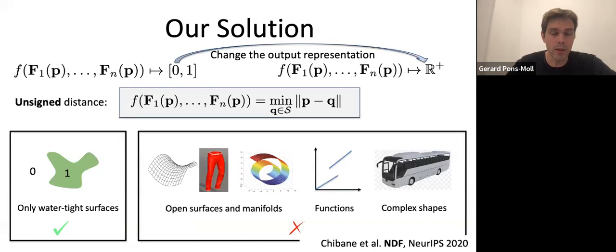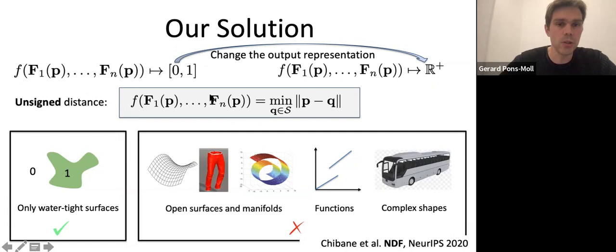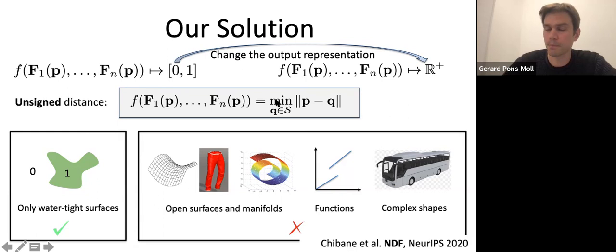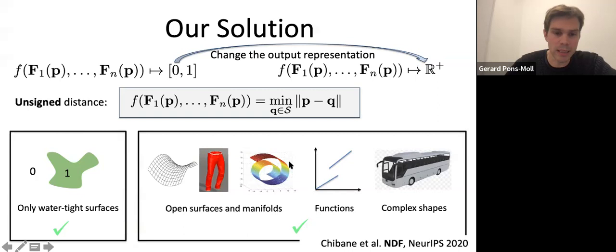The representation of the input is the same as before — we use these multi-scale deep features — and then we output the distance to the closest point Q on the surface. That's what the function returns: the distance to the surface. So if we use the unsigned distance field, in principle we can represent all these open surfaces. But the question is: how do we extract the surfaces once we have this unsigned distance field?